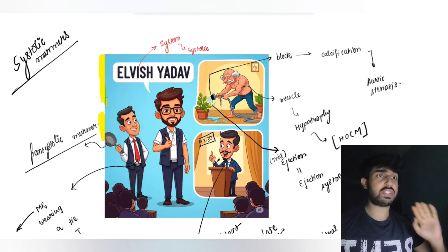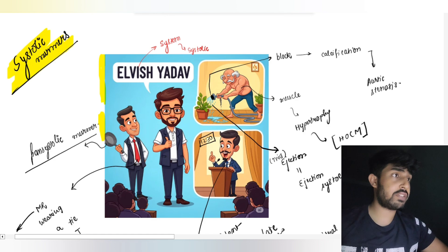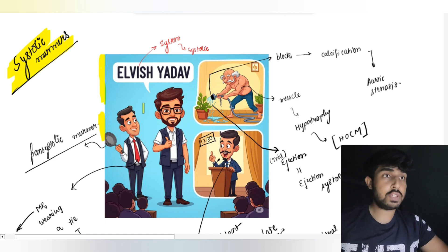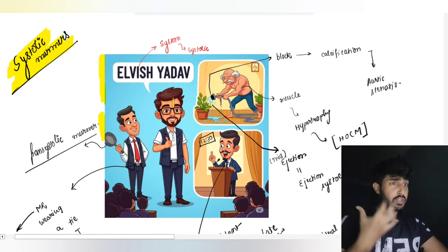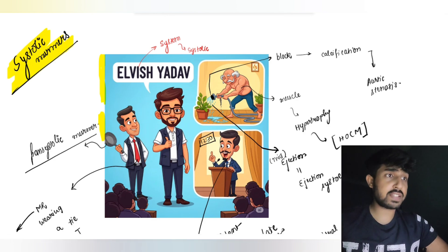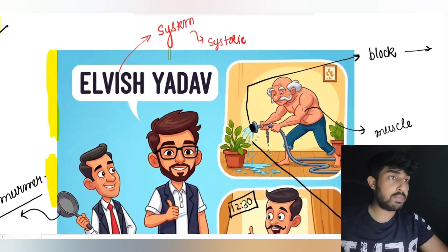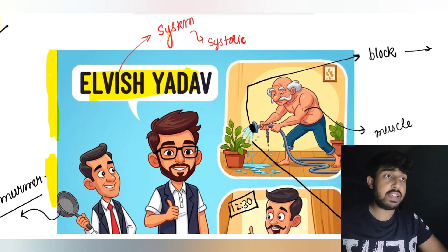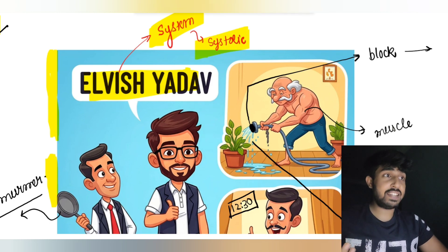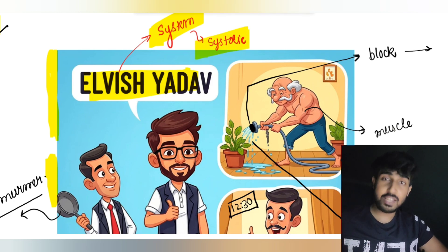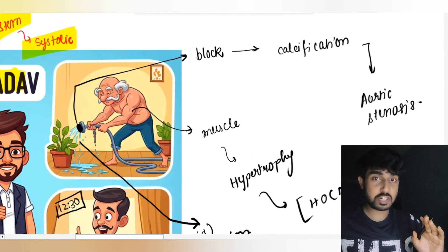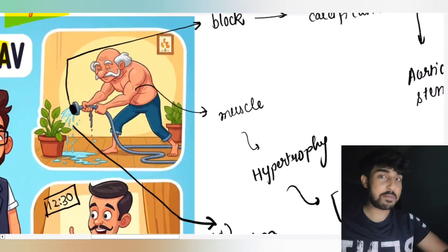Today we are going to discuss some systolic murmurs. I am zooming this image — he is Elvish Yadav, the brand ambassador of 'system'. The system says you have to remember systolic murmurs.